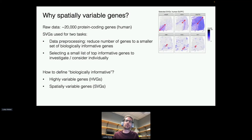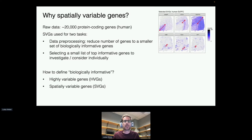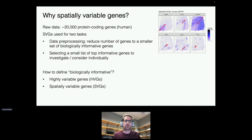Why look for spatially variable genes? First, from a data pre-processing and data reduction perspective — reducing the number of genes to a smaller, biologically informative set instead of the full 20,000 or so protein-coding genes, as a feature selection step for downstream analysis. Second, identifying a top list of informative genes to investigate individually. In the non-spatial world we use methods called highly variable genes; in the spatial world, taking into account spatial coordinates gives us spatially variable genes.